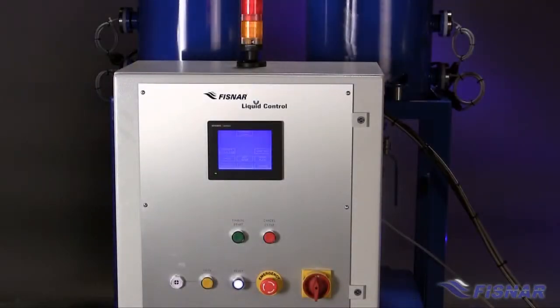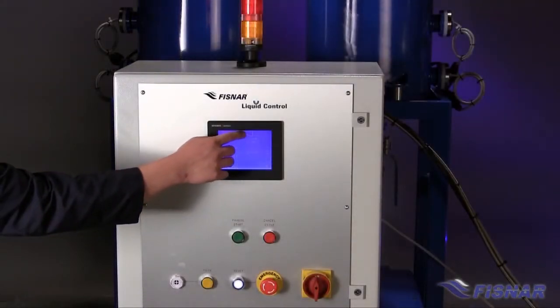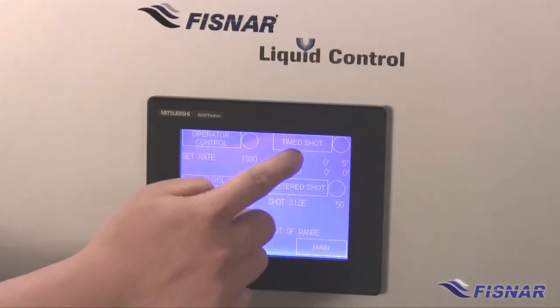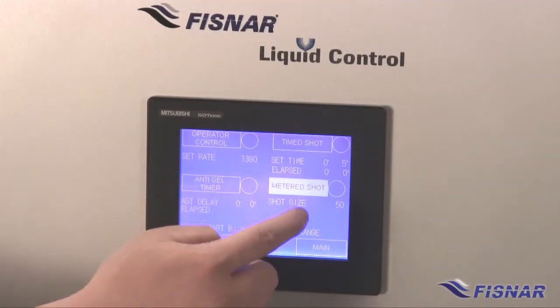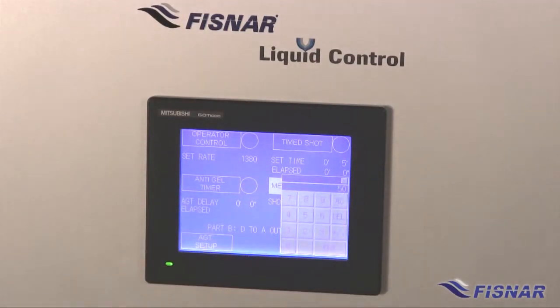To program a dispense volume, first select the dispense menu. Next select metered shot function. Enter the required volume and press enter to complete the programming.